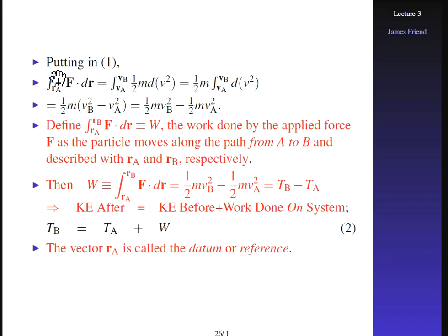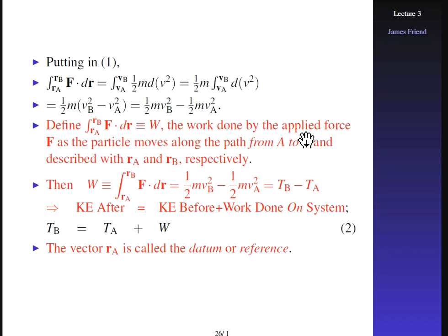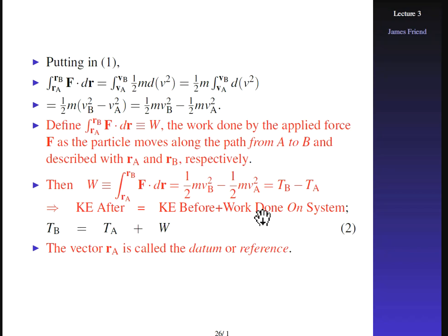The left-hand side, F·dr, is work. The right-hand side integrates from V_a to V_b of one-half M dV², giving one-half M(V_b² − V_a²). This is the change in kinetic energy. If we define that left-hand side as the work done by the applied force as the particle moves from a to b, then work equals the change in kinetic energy: T_b minus T_a. Kinetic energy afterwards equals kinetic energy before plus the work done on the system.